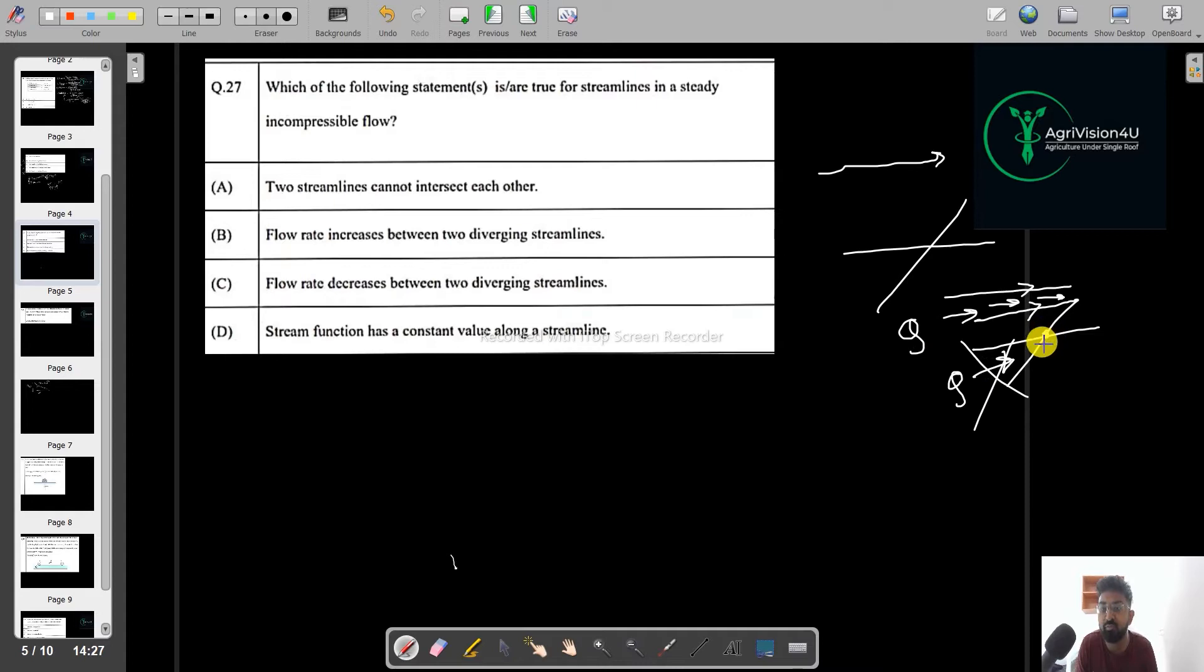At particular point, there should not be two different velocities. It will violate the rule. So that means this is correct, this is correct that the two streamlines cannot intersect each other.